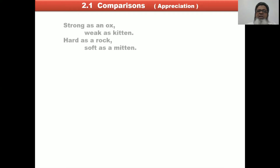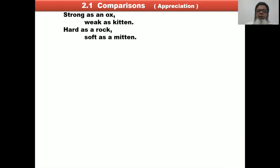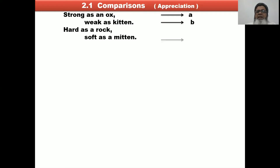Now we look at the poetry given in the question paper with the rhyme scheme. 'Strong as an ox' — label A. 'Weak as a kitten' — label B. 'Hard as a rock' — label C. 'Soft as a mitten' — 'kitten' and 'mitten' share the same last sound, so label B.